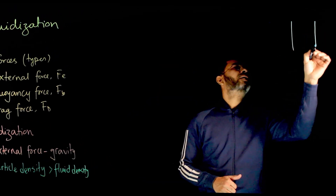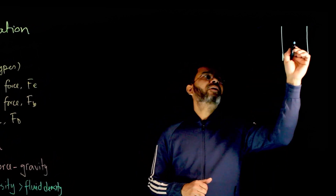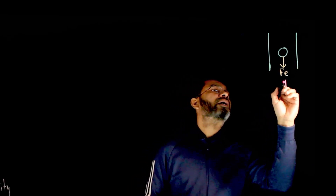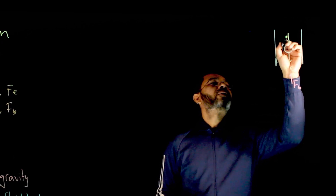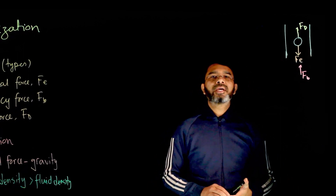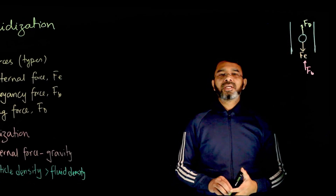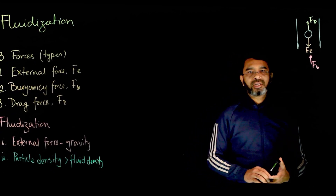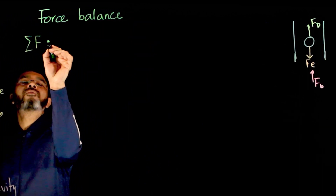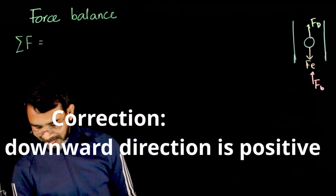If you look at a fluid column with fluid inside and a solid particle within that fluid volume, for our special case the external force is the gravitational force, so it acts downward. Because the fluid density is less than the solid density, the buoyancy force acts upward. The drag force also acts upward because we are considering the fluidization condition — the fluid is moving upward, so the relative velocity of the fluid is upward, causing an upward drag force. Doing the force balance and taking downward as negative, we sum all forces.